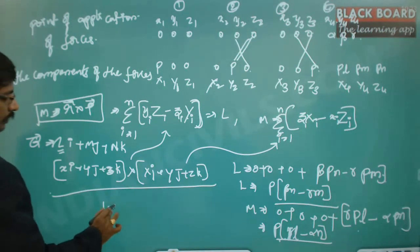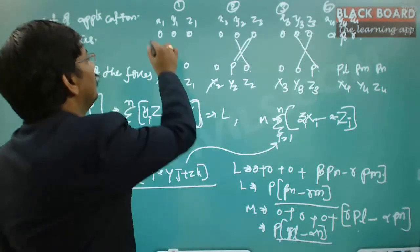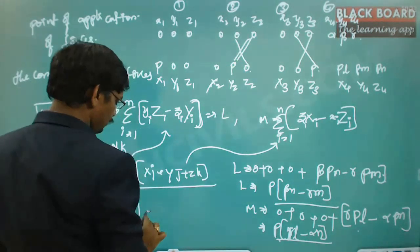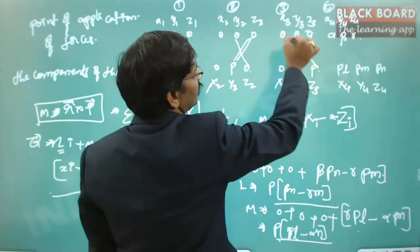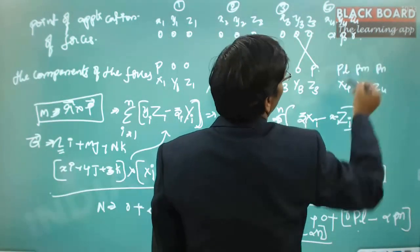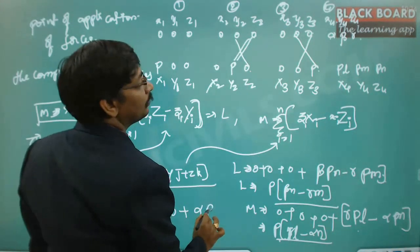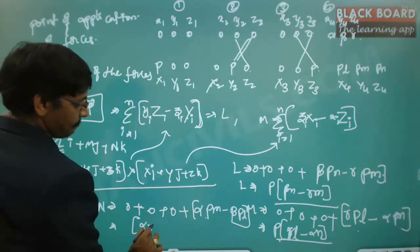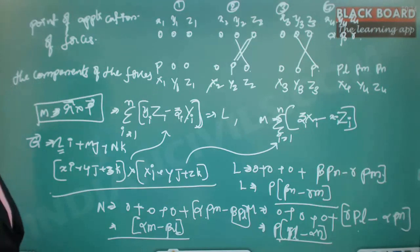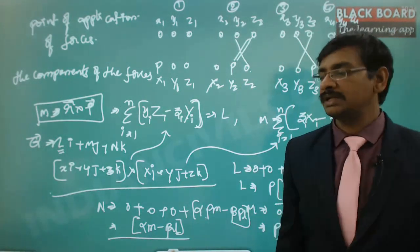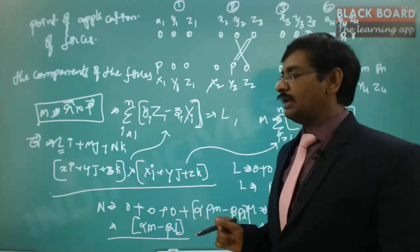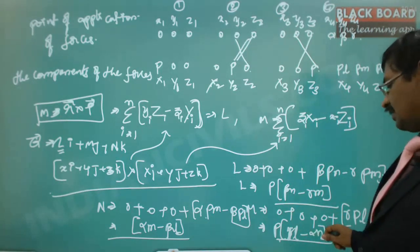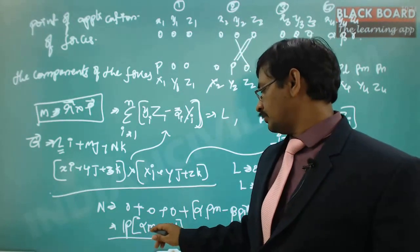For the N component (K component of moment), again using AD - BC: contributions from forces 1, 2, 3 are all zero. Force 4 contributes: α·PM - β·PL. So N = P(αM - βL). With this, we have found all three components of the resultant couple G = L·i + M·j + N·k, where L = P(βN - γM), M = P(γL - αN), and N = P(αM - βL).